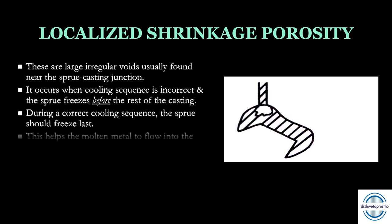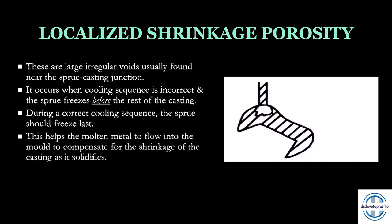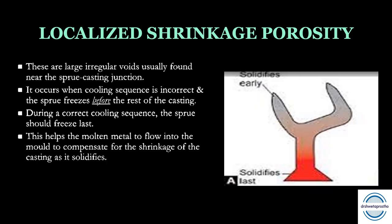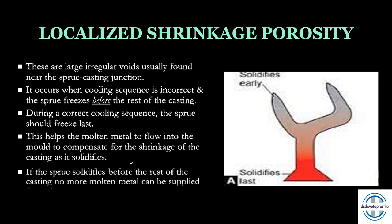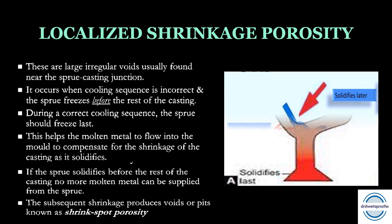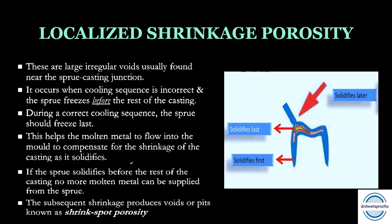Localized shrinkage porosity, also called shrink spot porosity, is asked as a separate short note in theory exams. These are large irregular voids found at the sprue-casting junction. The sprue is a channel that supplies molten metal to the mold and should solidify last. If the sprue freezes before the rest of the casting, it cannot supply metal, causing porosity. The last and bulkiest portion of the casting — the sprue-pattern junction — develops this porosity.